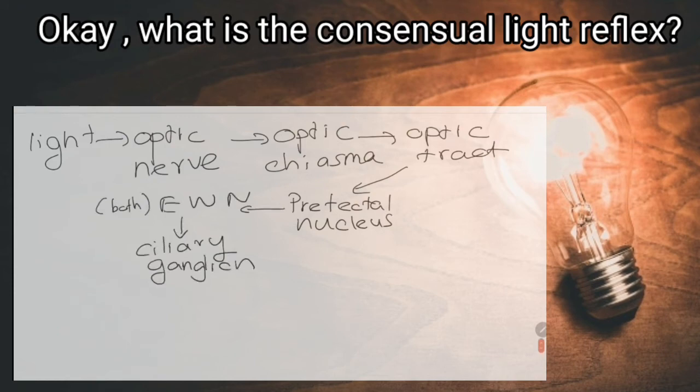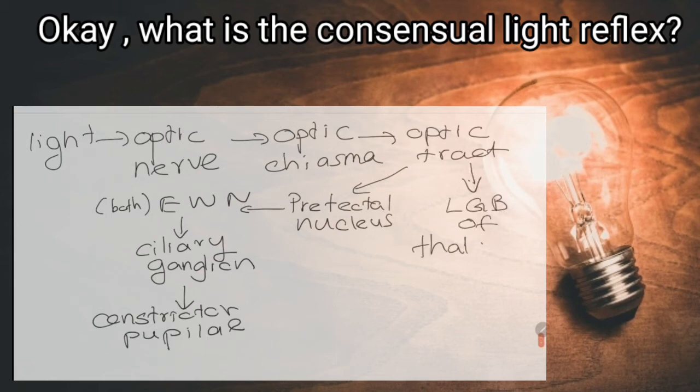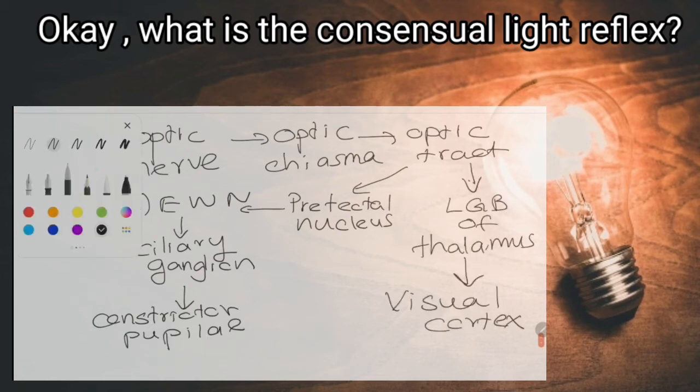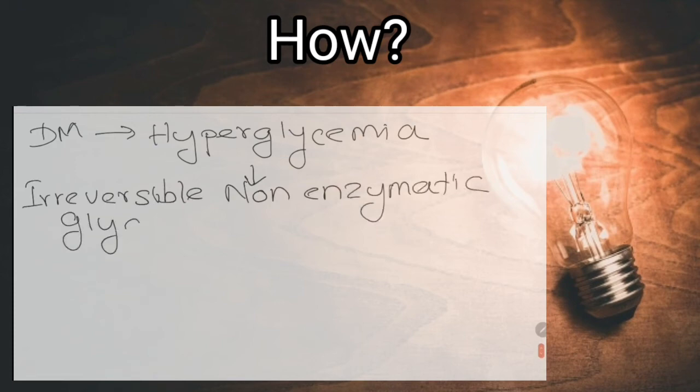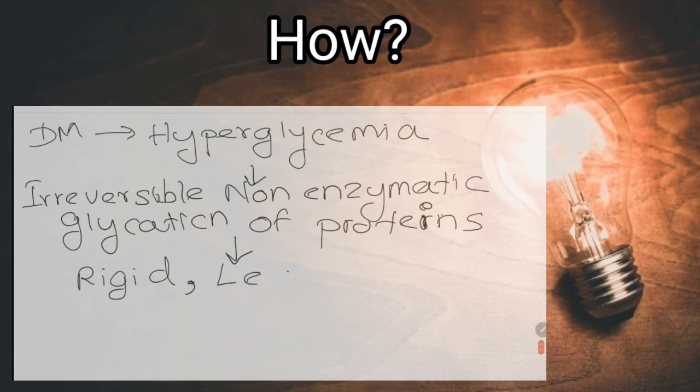Tell me a metabolic disease that can damage retina. Diabetes mellitus. How? Due to the irreversible non-enzymatic glycation of proteins of the retinal vessel walls, the retinal vessels become rigid and less expansible.